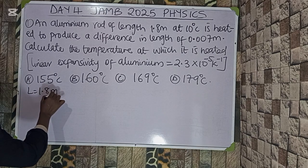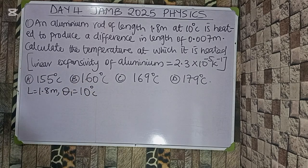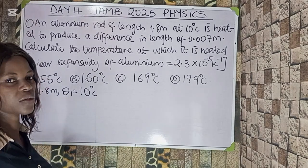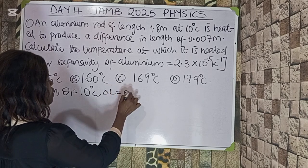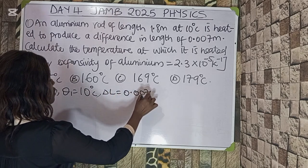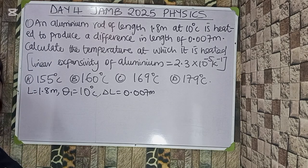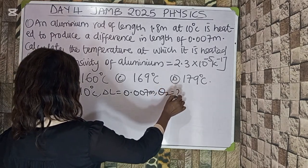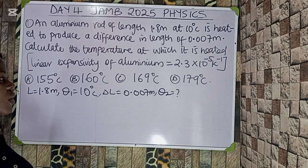Let us list the data parameters: L₁ = 1.8 meters, θ₁ = 10 degrees Celsius. The change in length — also called the increase in length — is given as 0.007 meters. What we're looking for is θ₂, and we're given alpha to be that value. What I'm going to do is find the temperature rise first, then find θ₂.